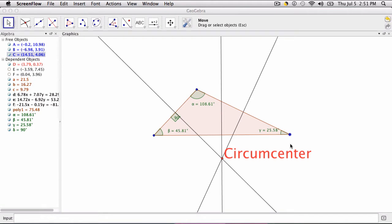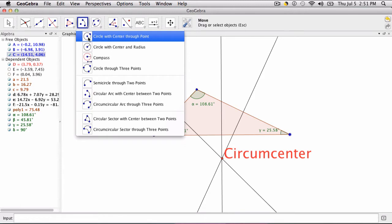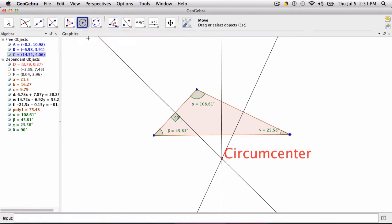So now, to construct the circum-circle, all we need to do is select our circle tool with a center through a point, and select the center of the circle as the circum-center and one of the vertices.